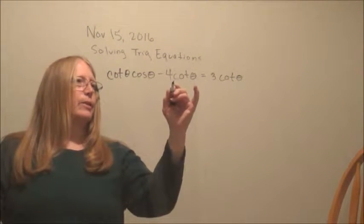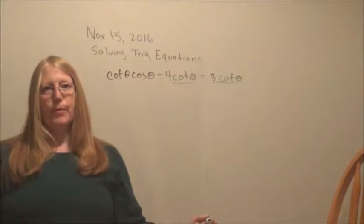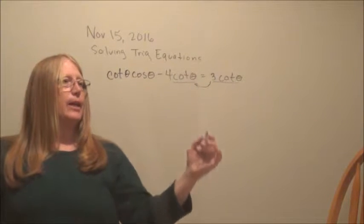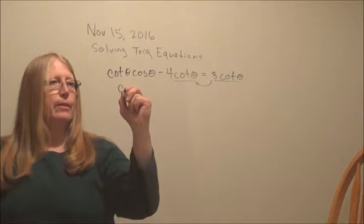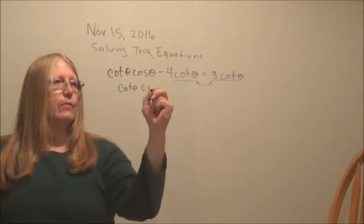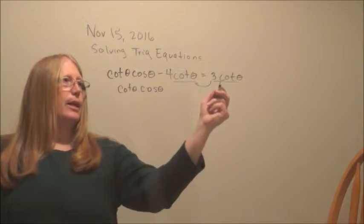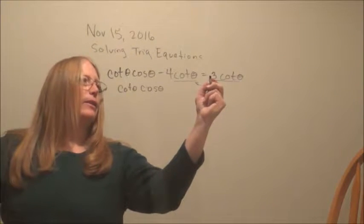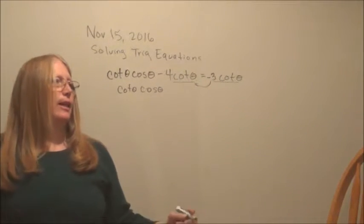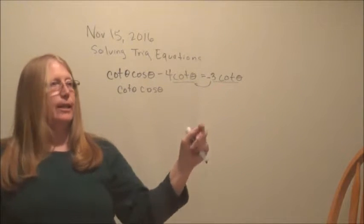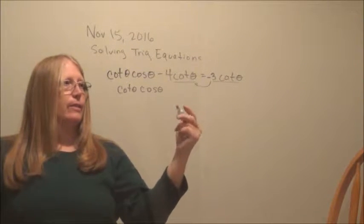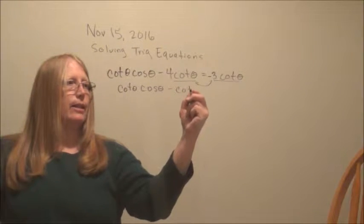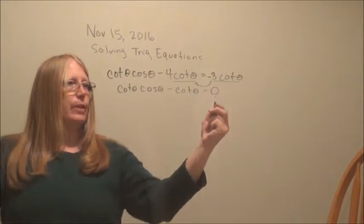I see like terms, so I'm going to combine as many of those as possible before I decide what to do next. If I add plus 3 cotangent to both sides, that will give me a minus cotangent theta over here equals zero.